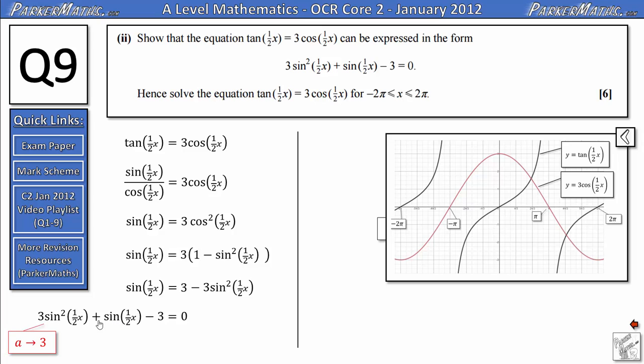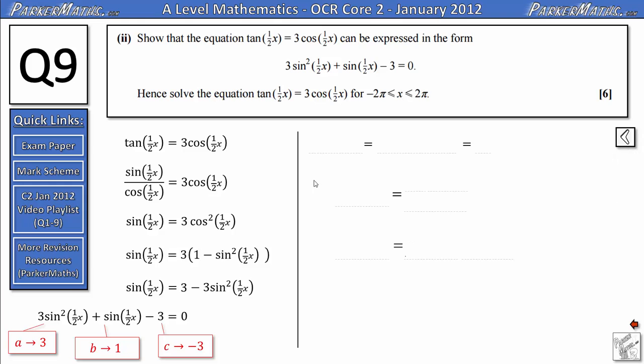So a = 3, b = 1, and c = -3. So if I do b² - 4ac, that's 1² - 4 × 3 × (-3), which gives me 37. So because √37 is a surd, that means it's not going to be easy to factorize, and it's probably sensible to use the formula instead.